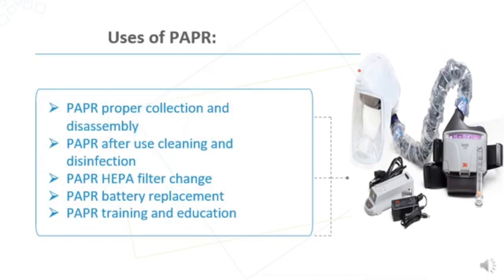There are specific indications and uses for the PAPR. Key aspects to consider when using a PAPR include: proper collection and disassembly after use, cleaning and disinfection, HEPA filter change, battery replacement, and PAPR training and education. All these measures must be addressed when using the PAPR machine.